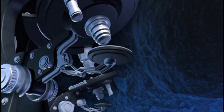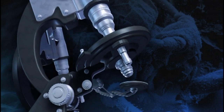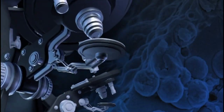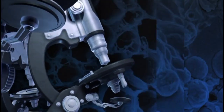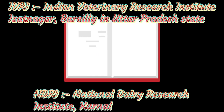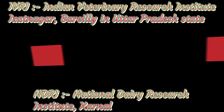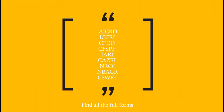The next topic is important research centers or institutions. You should know the full forms of important research institutes like IVRI, NDRI, and KAZRI. You should also know where they are located, as these are generally asked questions.